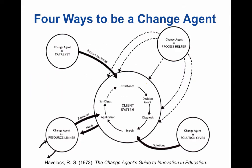Havelock also said that there are four ways to be a change agent. One is to be a change agent as a catalyst, providing pressure on a client system to change. This could be any number of people — for example, parents who would like to see change in a school, or students in a university that would like to see change in the way their courses are delivered.